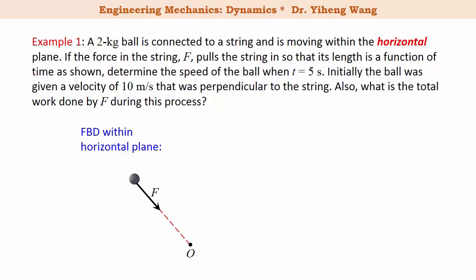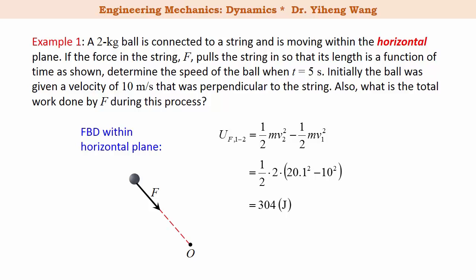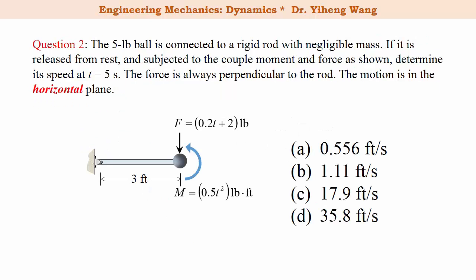Since motion only happens within the horizontal plane, force F is the only force doing work on this particle. Therefore the total work done by F can be determined by applying the principle of work and energy. Substituting the mass of the particle and its initial and final speeds, the total work done by F is 304 joules.